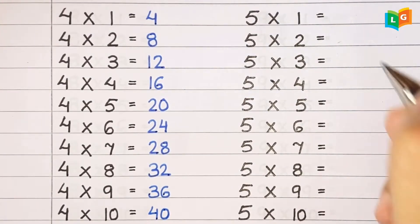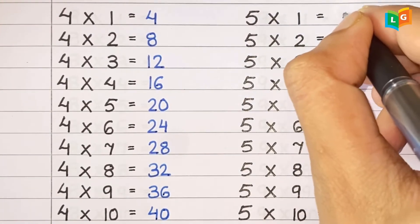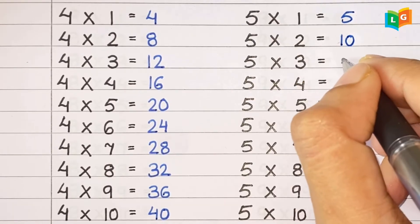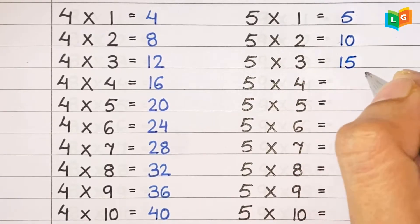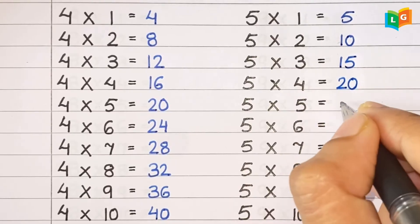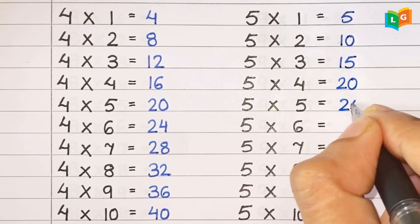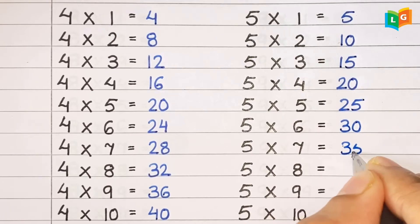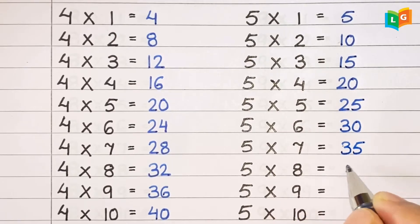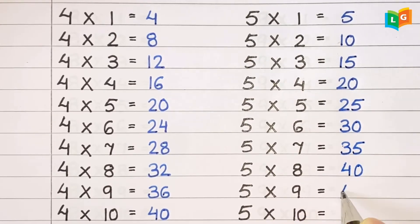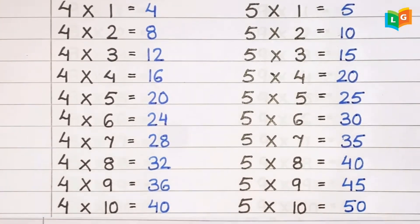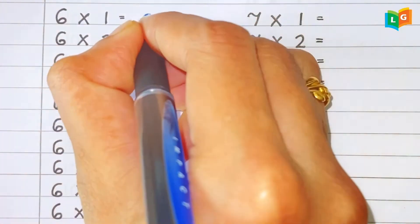Let's see table of 5. 5 1s are 5, 5 2s are 10, 5 3s are 15, 5 4s are 20, 5 5s are 25, 5 6s are 30, 5 7s are 35, 5 8s are 40, 5 9s are 45 and 5 10s are 50.